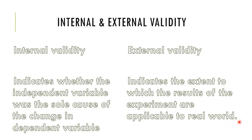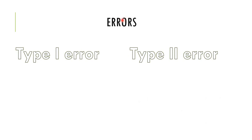Threats to external validity include population validity and experiment effects. Two types of errors exist in experimental research: Type 1 error — when the researcher rejects the null hypothesis when it should actually be accepted. These errors cause problems, so researchers need to revise their study.